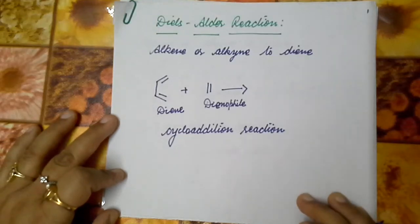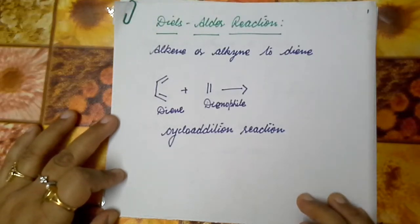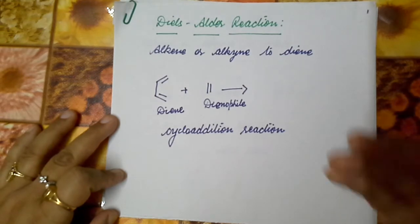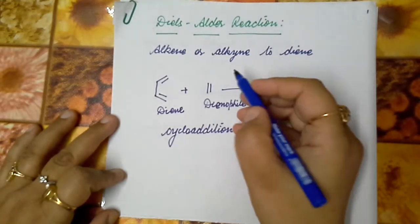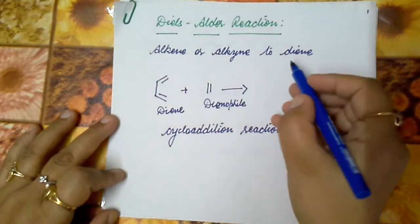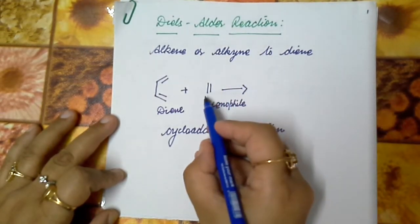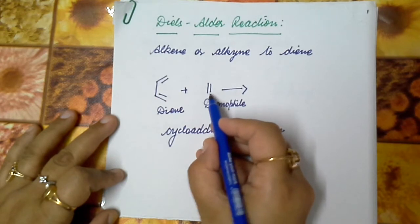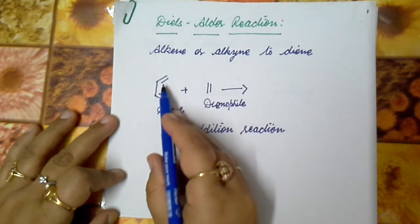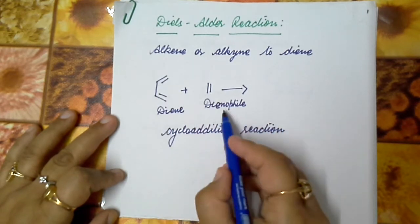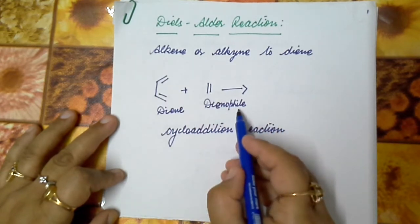Hello friends, myself Manjotkar and today we are going to study a very important reaction of chemistry — the Diels-Alder reaction. This is the reaction of an alkene or alkyne with a diene. The alkene or alkyne which reacts with the diene is known as a dienophile.